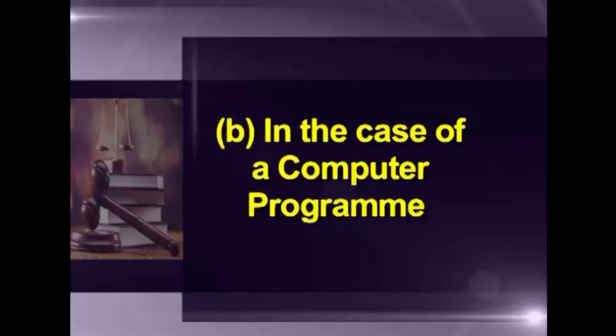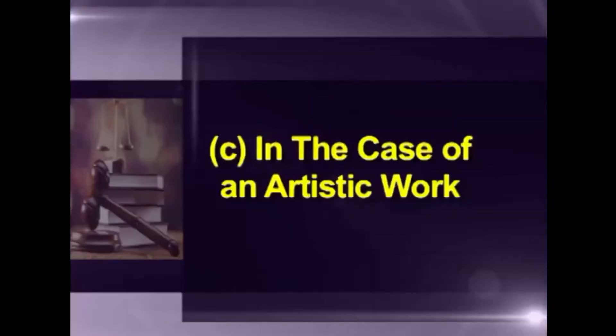In the case of a computer program, the rights include the right to do any of the acts mentioned, and in addition, to offer for sale or for commercial rental any copy of the computer program. In the case of an artistic work, the rights include the right to reproduce the work in any material form, to communicate the work to the public, to issue copies of the work to the public not being copies already in circulation, to include the work in a cinema, to make any adaptation of the work, and to do in relation to an adaptation of the work any of the acts specified above.